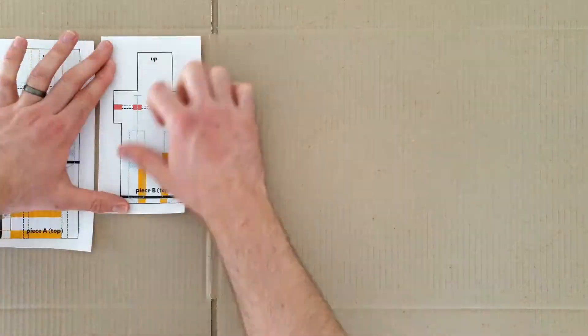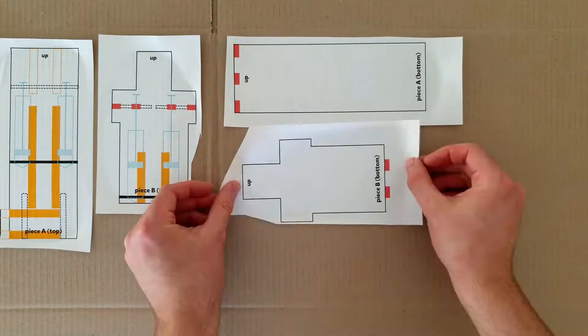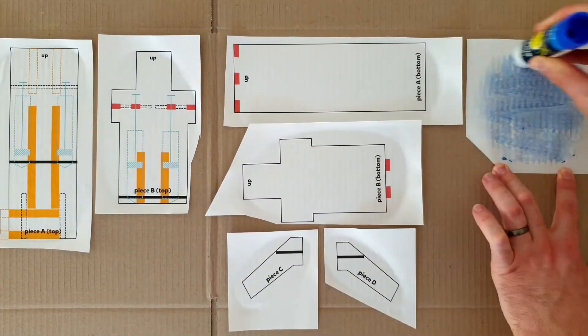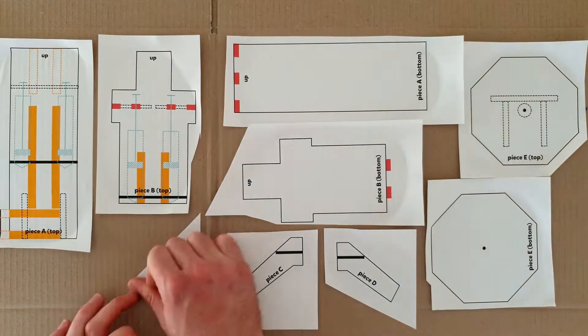Next, glue each of these pieces to the cardboard. When doing this, glue the top pieces vertically and the bottom pieces horizontally. This helps to make the final pieces stronger.